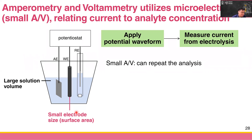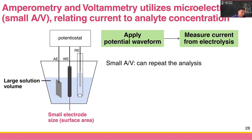Amperometry and voltammetry is a small A per V technique because we use small electrode size compared to the large solution volume. This means that even when we perform electrolysis by applying the waveform, only the surface concentration changes. The outer bulk solution maintains the same composition. Even if we generate some oxidation or reduction, the bulk concentration stays the same. This is why we sometimes call this technique microelectrolysis, which utilizes small A per V conditions.